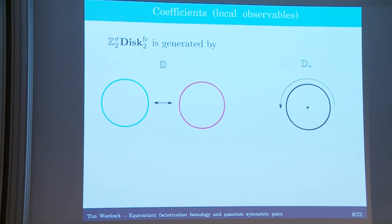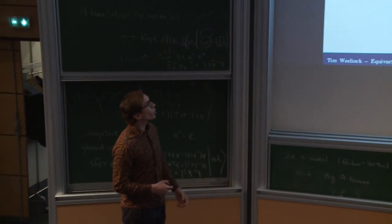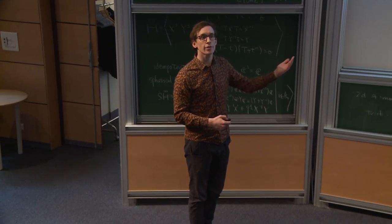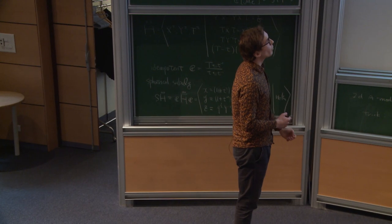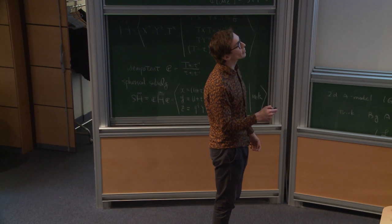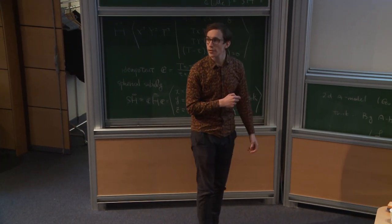We're going to move to two dimensions, back to the Z2 group with the sign representation. First we need to think about what kind of algebraic data we need to fix in order to get invariants. The question is: what does it mean to have a symmetric monoidal functor out of this category of disks? Well, there are only two types of orbital disks in this case: the free quotient and the singular quotient, at least for this given representation.